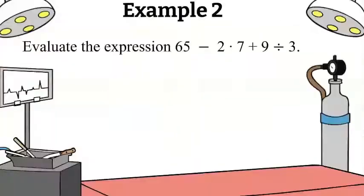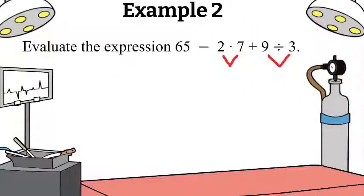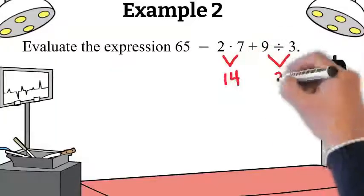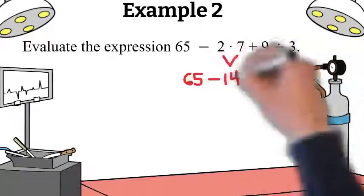Let's try another. This problem doesn't have any parentheses or exponents. That leaves multiplication and division. Since this problem has both, we need to work left to right. 2 times 7 is 14, and now 9 divided by 3 is 3.